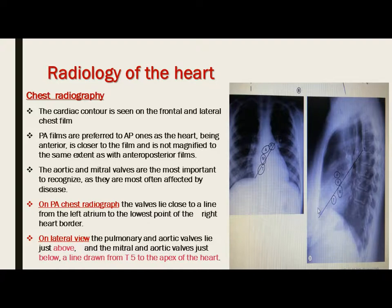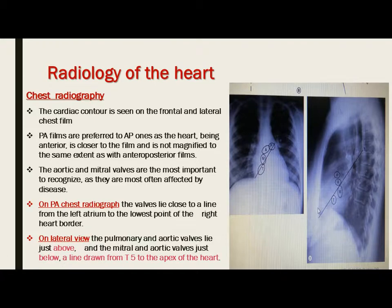On the chest radiograph, the cardiac contour is seen on the frontal and lateral chest film. PA films are preferred over AP ones, as the heart being anterior is closer to the film and is not magnified to the same extent. The aortic and mitral valves are the most important to recognize as they are most often affected by disease. On the PA radiograph the valves lie close to a line from the left atrium to the lowest point of the right heart border. On the lateral view, the pulmonary and aortic valves lie just above a line drawn from T5 to the apex of the heart, while the mitral and tricuspid valves lie just below this line.